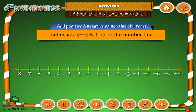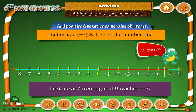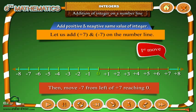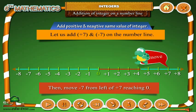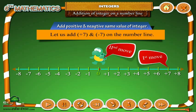Now let us add a positive and negative integer of the same value. Let us add plus 7 and minus 7 on the number line. First, move 7 steps to the right of 0, reaching plus 7. Then move 7 steps to the left of plus 7, reaching 0. Thus, plus 7 plus minus 7 is equals to 0.